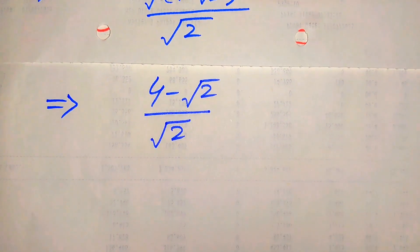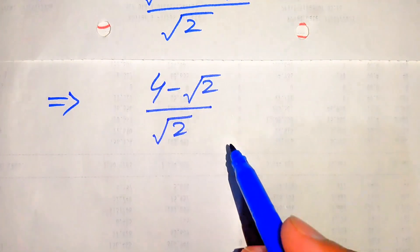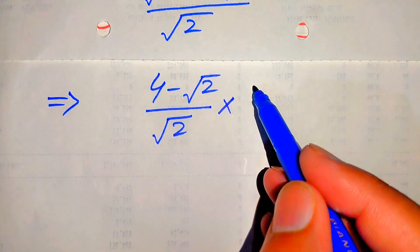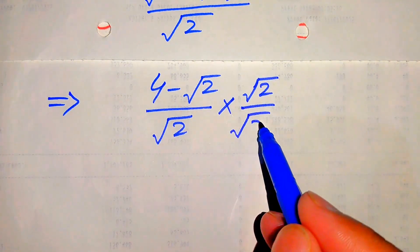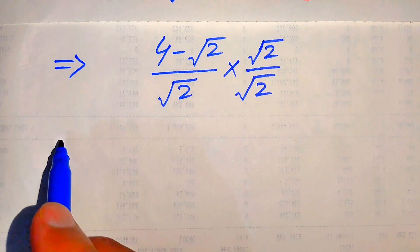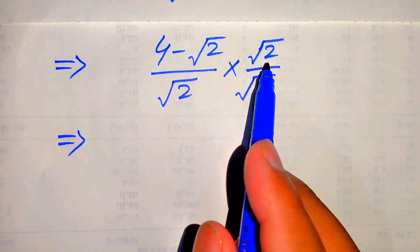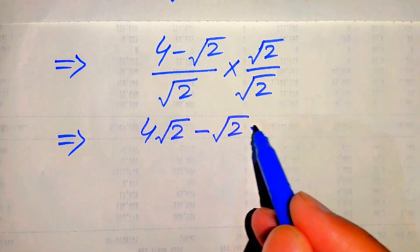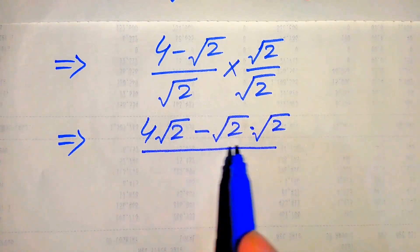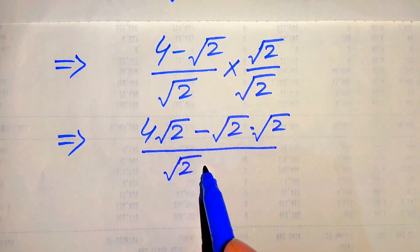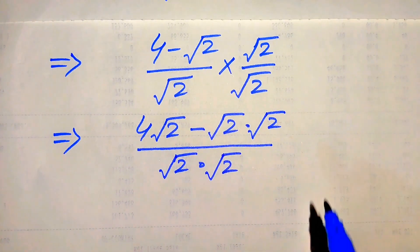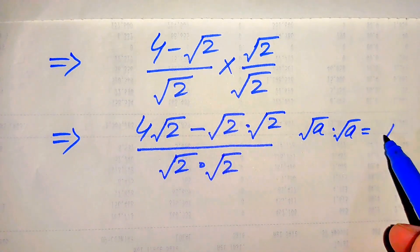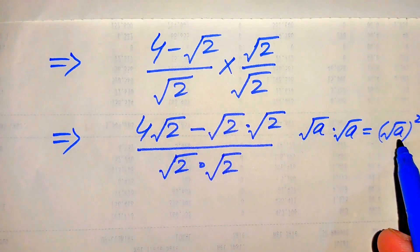We need to write our answer in simplified form, so we need more simplifications. We rationalize this term by multiplying and dividing by square root of 2. When we multiply square root of 2 on both values in the numerator, we get 4 times square root of 2 minus square root of 2 multiplied by square root of 2, divided by square root of 2 multiplied by square root of 2. We can combine these into squared form.